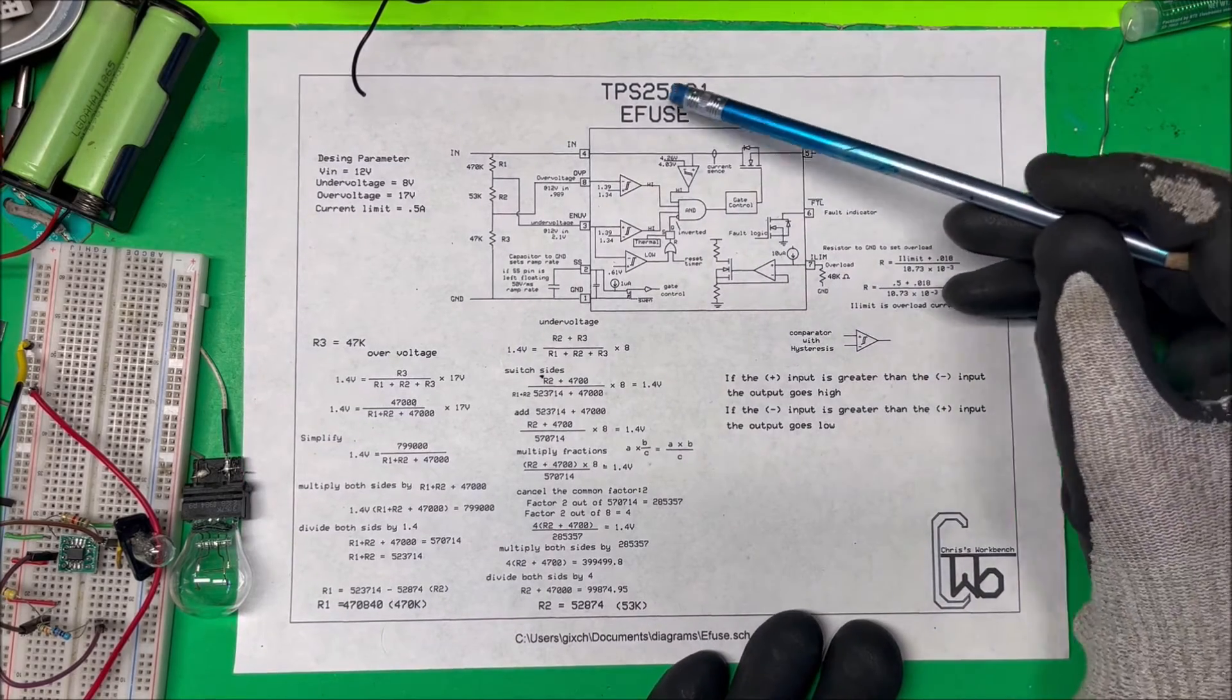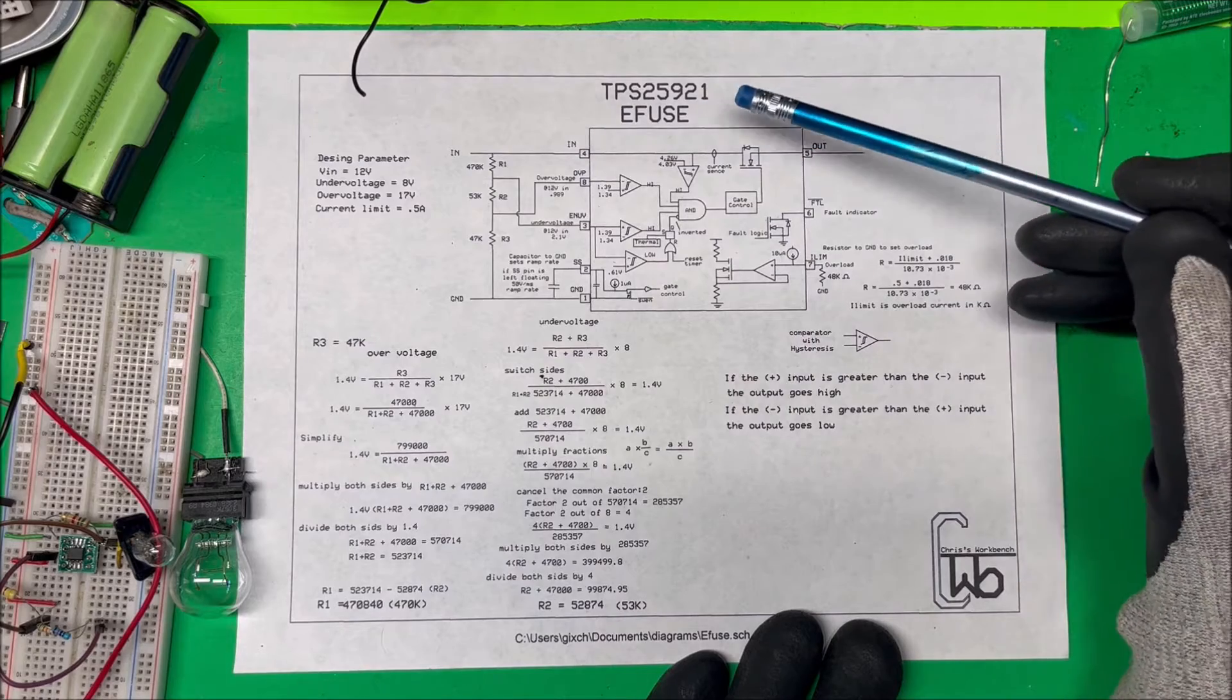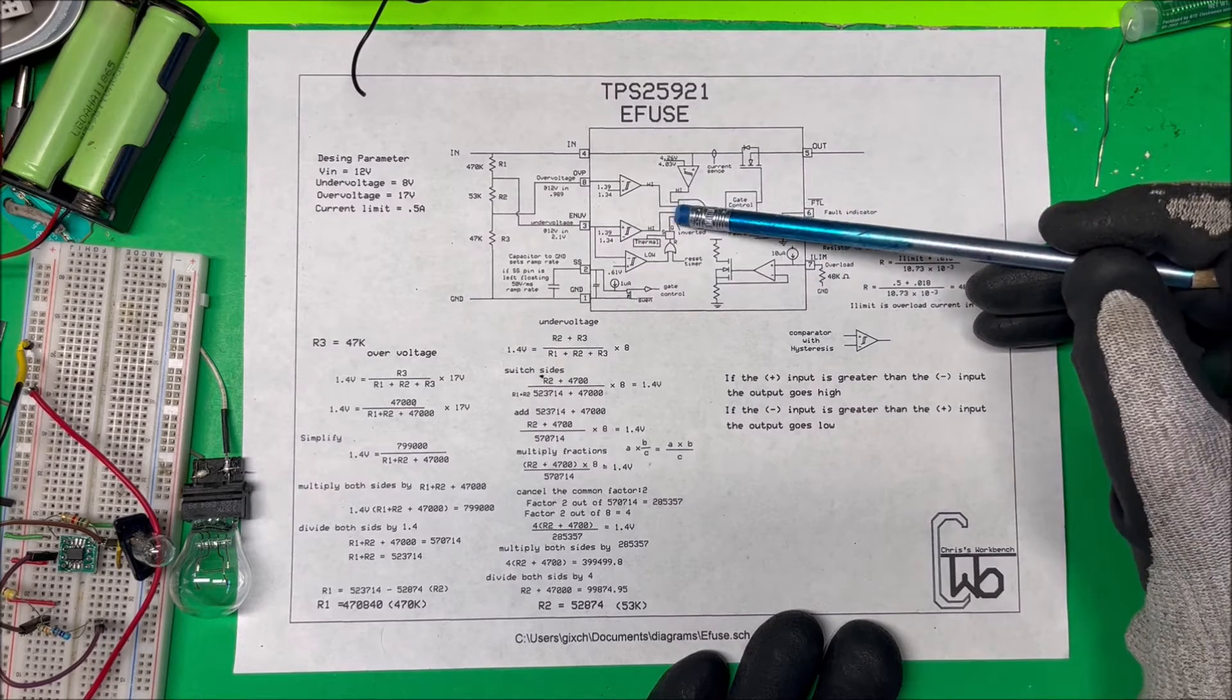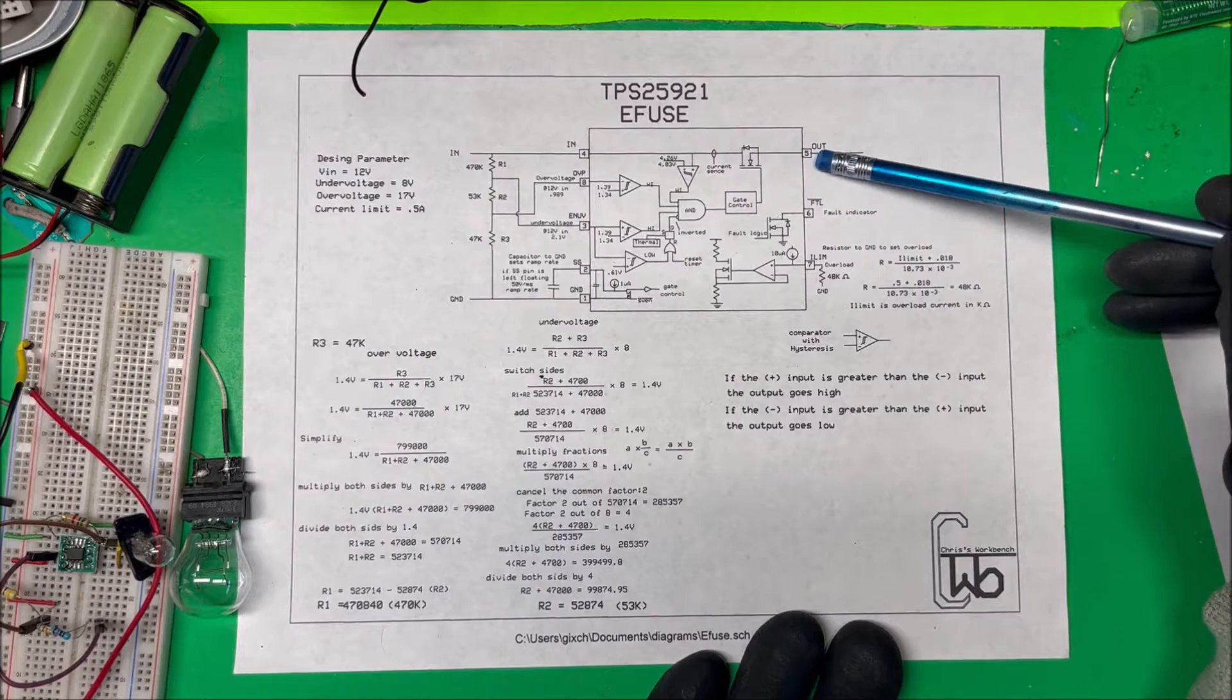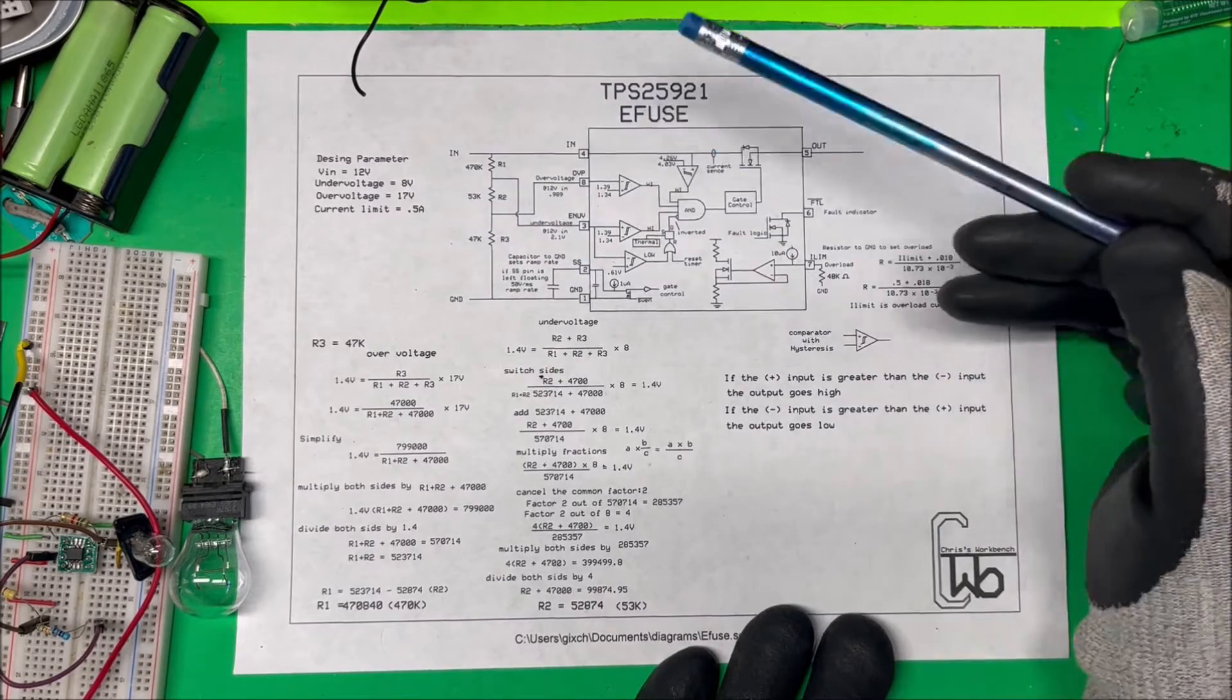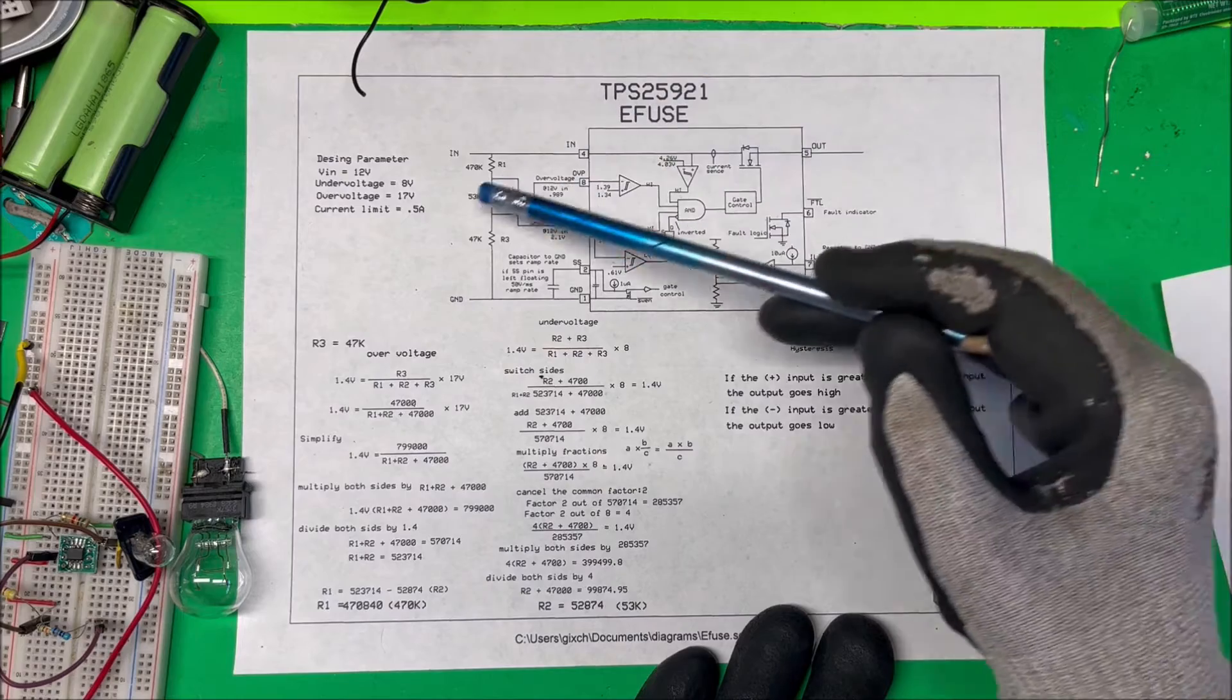Let's take a look at an e-fuse, the TPS25921. These devices detect overvoltage, undervoltage, or overcurrent and turn off the load through this FET. In this case, I'm using 12 volts in, I want my undervoltage to be 8 volts, overvoltage at 17 volts, and I'm going to set a current limit of 0.5 amps.